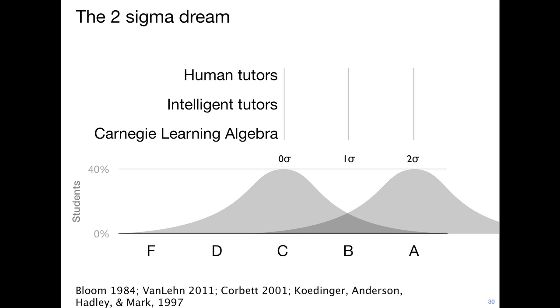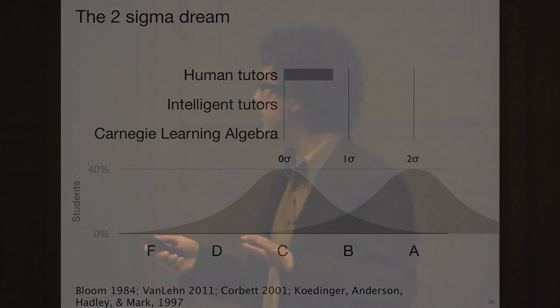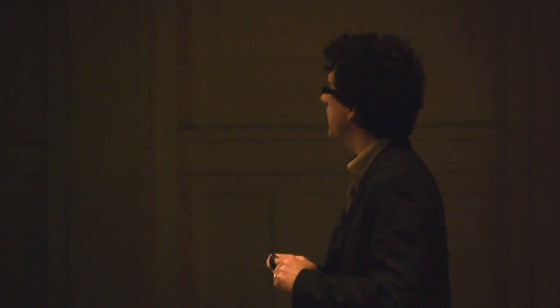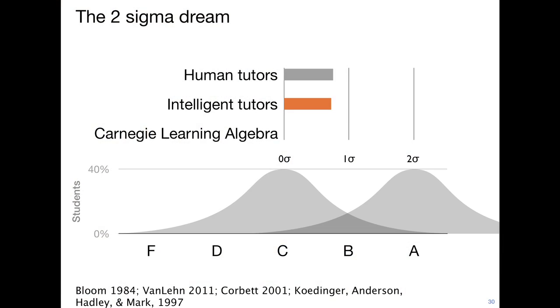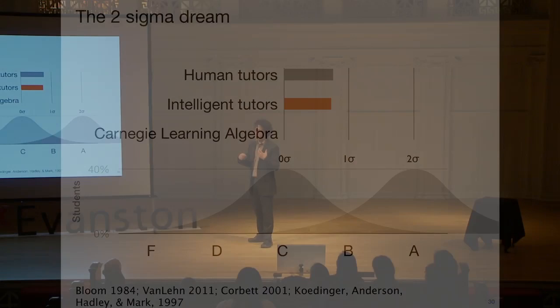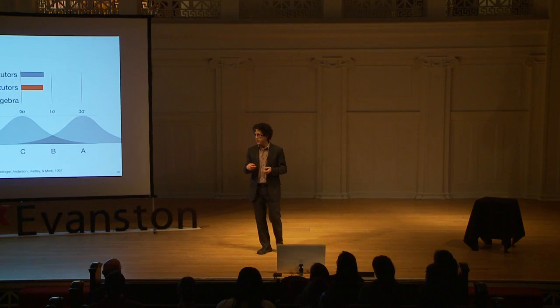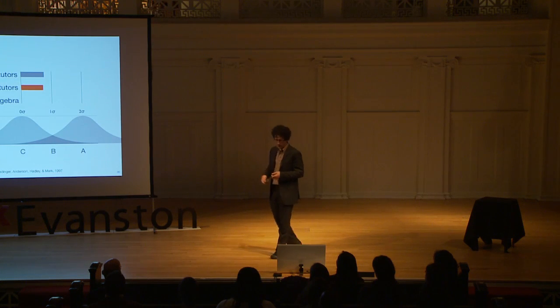So where are we today? Well, one thing we've learned is that human tutors aren't quite as good as we had hoped — they're getting, on average, about a 0.79 effect size. That's still amazing. If anyone working in education gets that kind of effect size, we're happy and we go home. After 30 or 40 years of intelligent tutoring research, we're basically, at least in STEM domains, approximately at parity with a human tutor. Of course, if you look at particular tutors, depending on who you ask, where you measure, and how you measure, you can get even bigger gains.